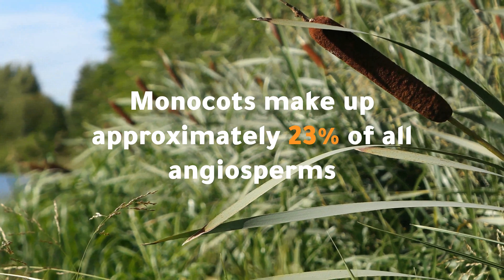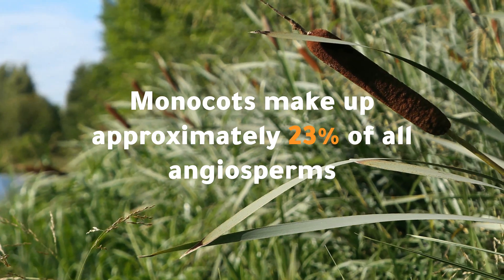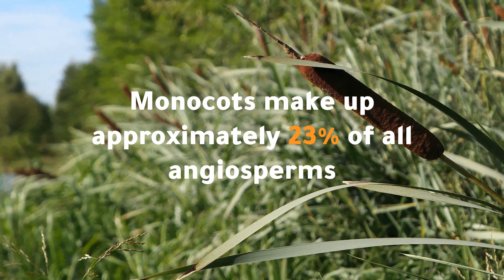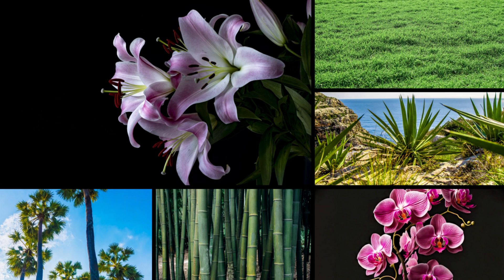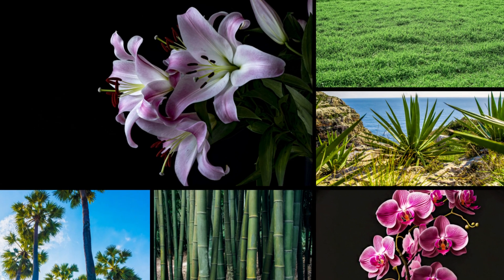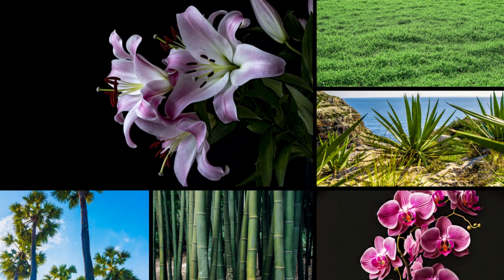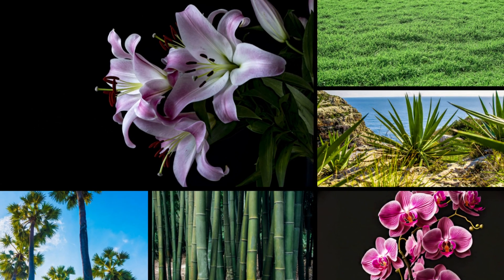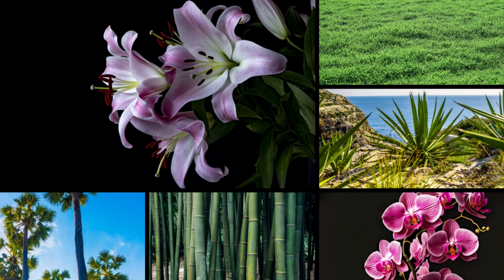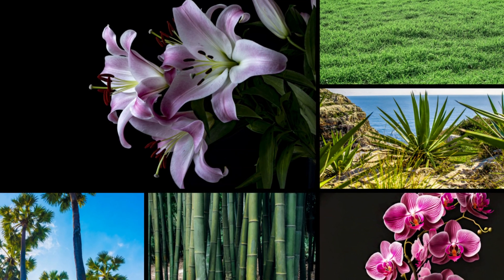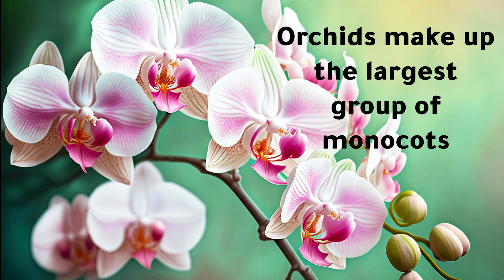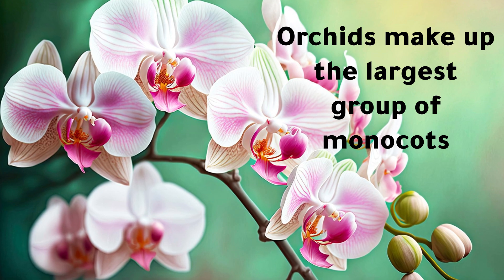Monocots make up approximately 23% of all angiosperms. Species include grasses, sedges, bamboo, palms, yuccas, joshua trees, orchids, lilies, onions, and so on. Orchids make up the largest group of monocots.